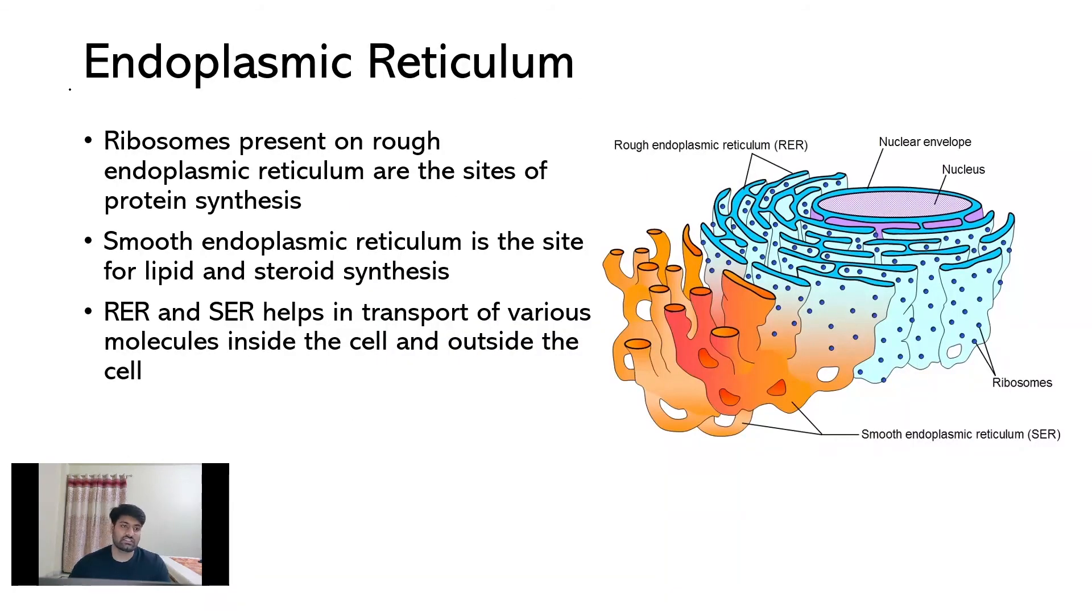In the next part of discussion, I will be discussing about some major types of cell organelles. Starting with endoplasmic reticulum. There are two types of endoplasmic reticulum, rough endoplasmic reticulum, which have ribosomes present on their surface and which are the sites of protein synthesis. And the smooth endoplasmic reticulum, which is the site for lipid and steroid synthesis. Together, RER and SER help in transport of various kinds of chemicals and compounds inside the cell, which is called as intracellular transport.